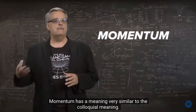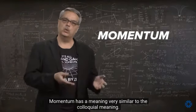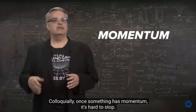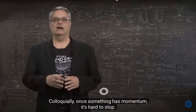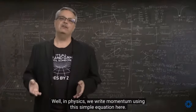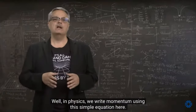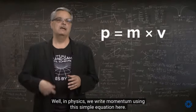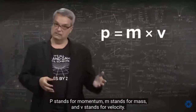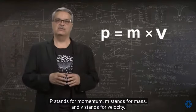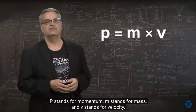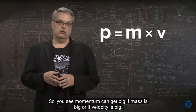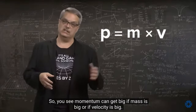If you've ever had a physics class, you've encountered momentum. Momentum has a meaning very similar to the colloquial meaning — once something has momentum, it's hard to stop. In physics, we write momentum as P equals M times V, where P stands for momentum, M stands for mass, and V stands for velocity. Momentum can get big if mass is big, or if velocity is big, or both.